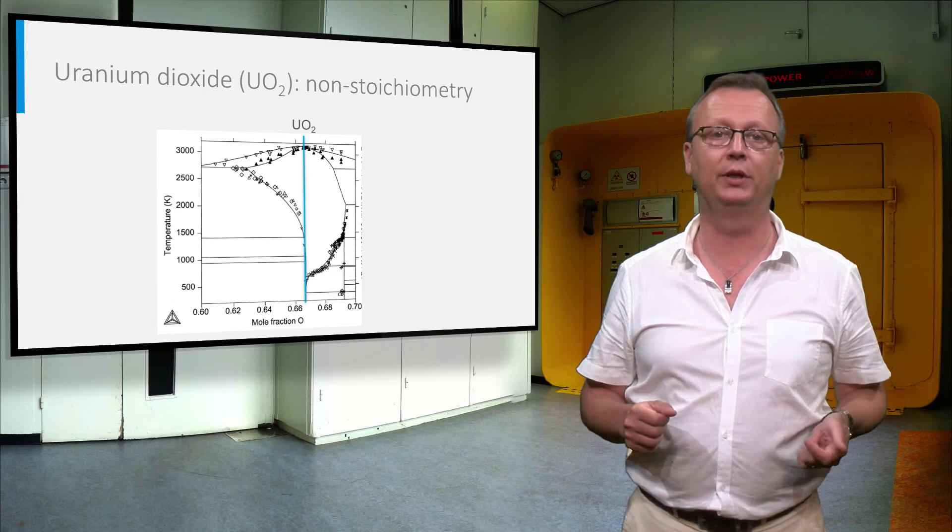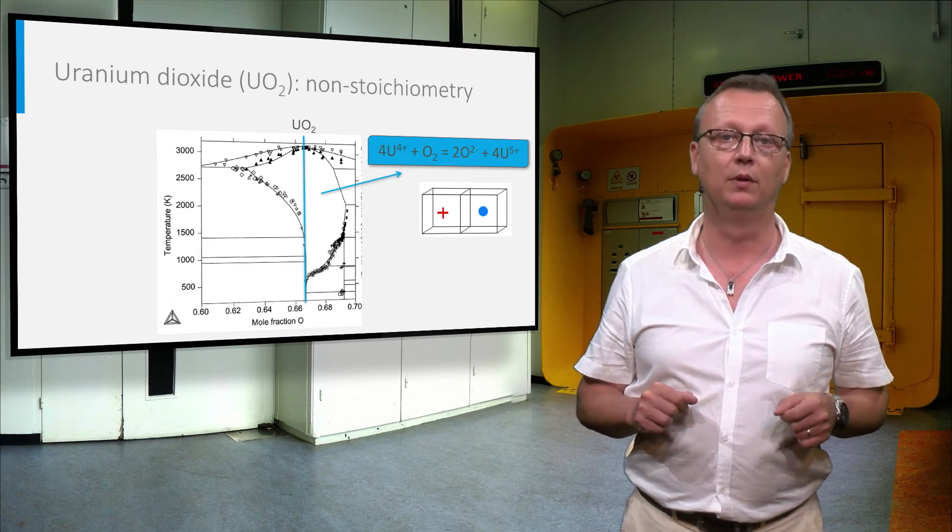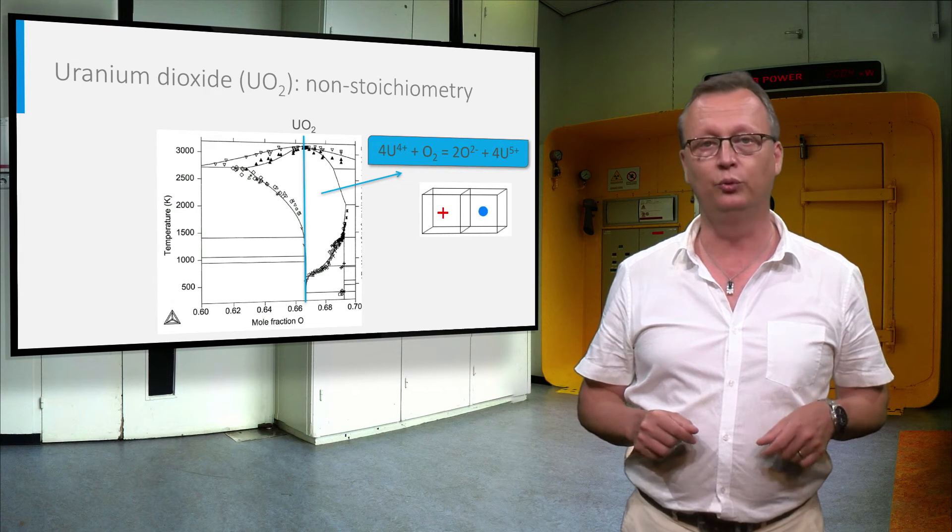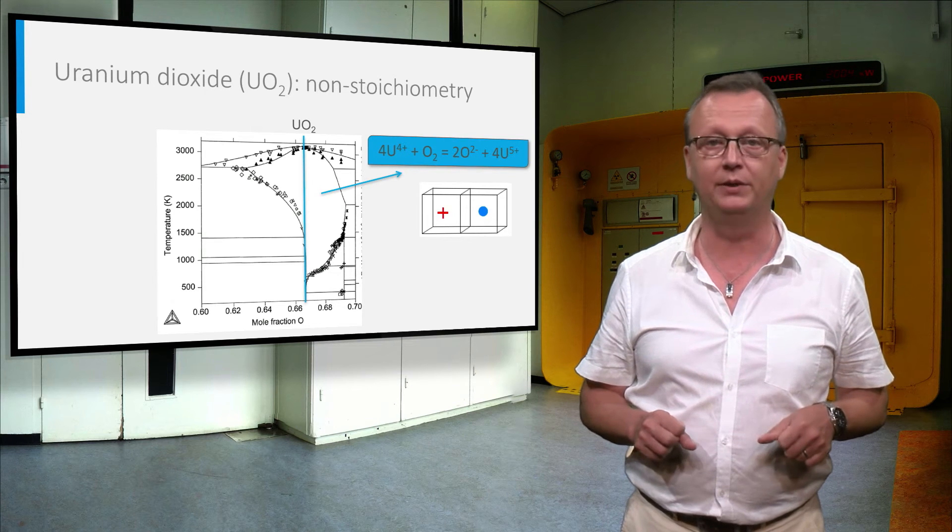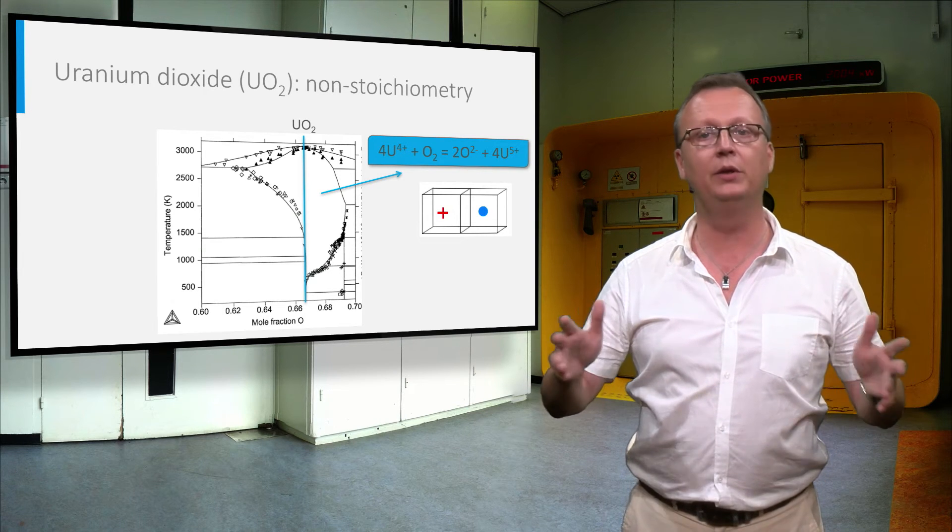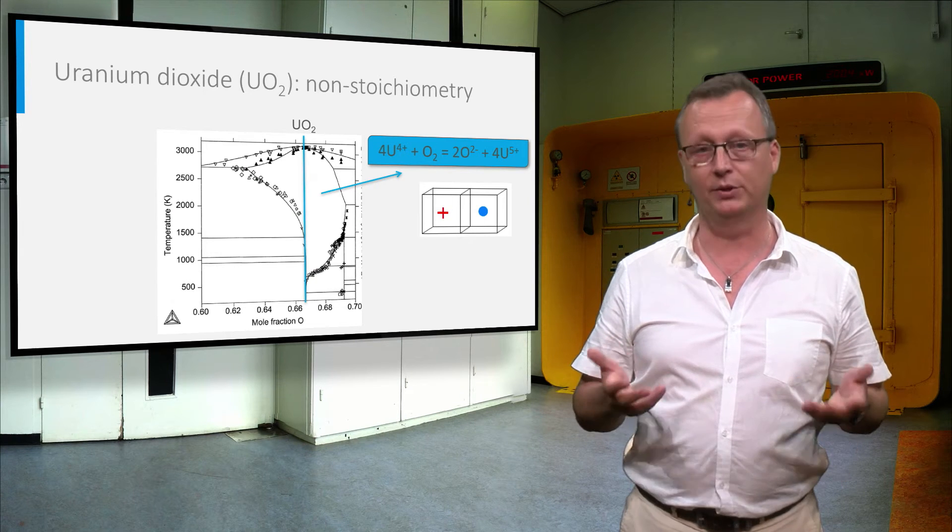For example, extra oxygen in the empty cubes, indicated by the red plus symbol. For this to happen, two uranium atoms are further oxidized to 5+ in order to keep electroneutrality. The oxygen to uranium ratio will thus become larger than 2, which is called hyperstoichiometric.